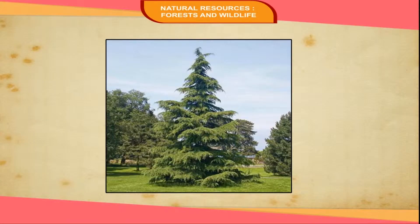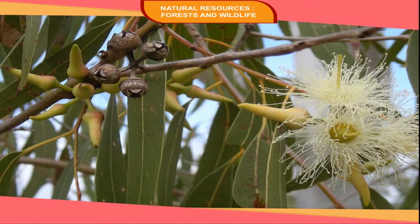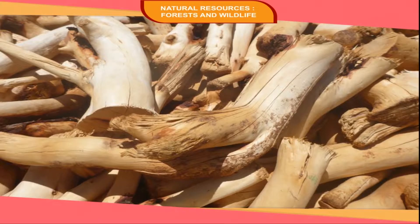Sal, deodar, bamboo, eucalyptus, sandalwood, and acacia are the main species found in tropical monsoon forests.